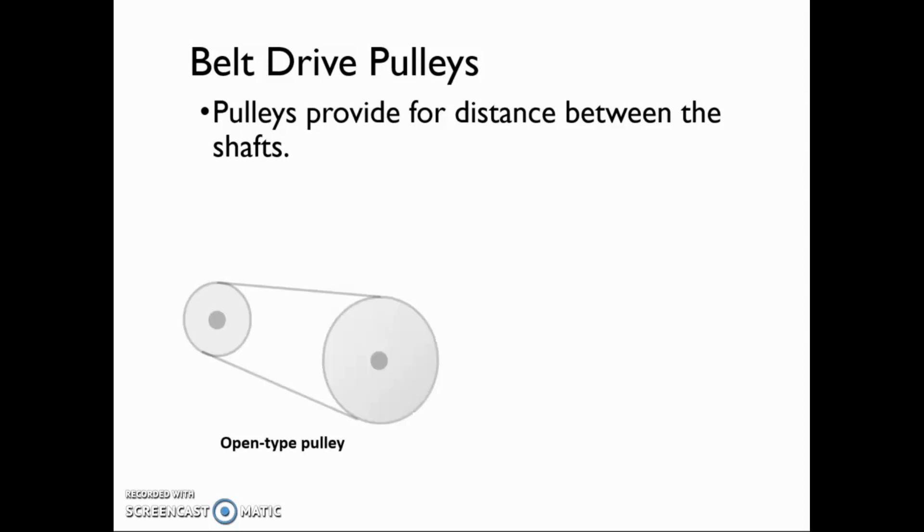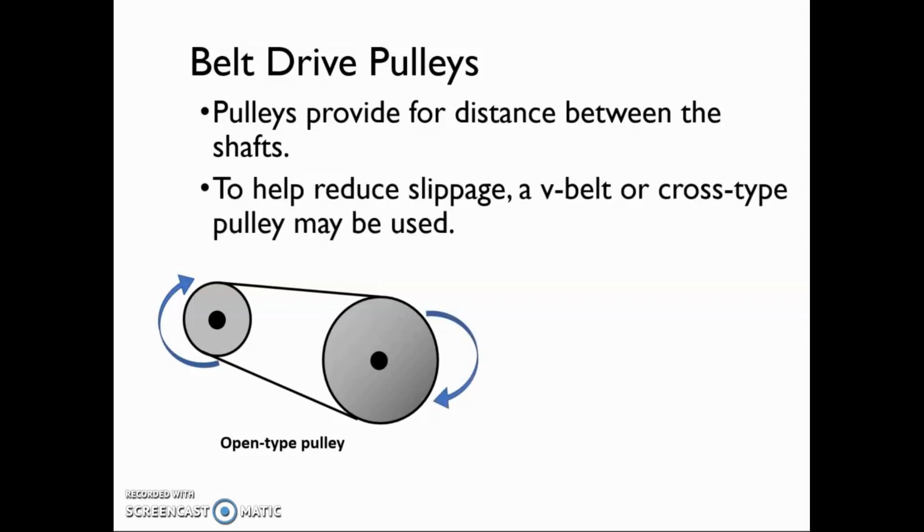In an open type pulley, the two shafts that the belts connect rotate in the same direction. However, to help reduce slippage or to change the direction of rotation, a cross type pulley or v-belt may be used.